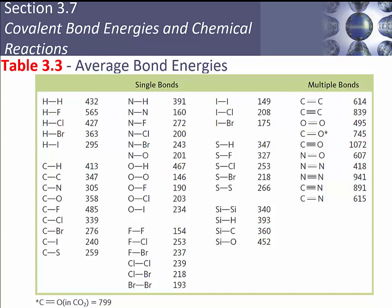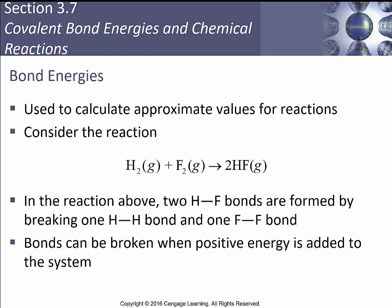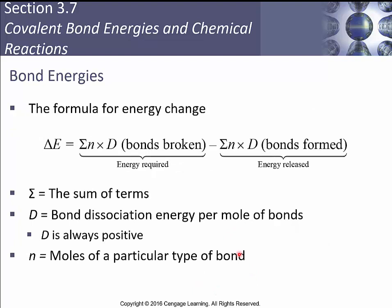Bond energies can be used to calculate approximate values for reactions. For example, H₂ gas and fluorine gas forming two HF molecules involves breaking one H-H bond and one F-F bond, while forming two H-F bonds. Bonds are broken when positive energy is added; forming a bond releases energy. The equation is: ΔE = Σ(bond energies broken) − Σ(bond energies formed). D is the bond dissociation energy, always positive, and n is the number of moles of a particular bond.